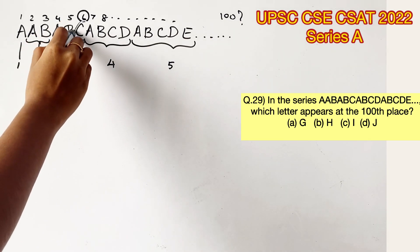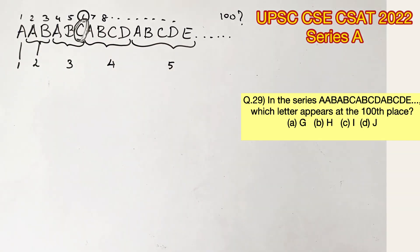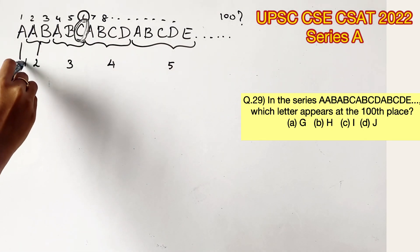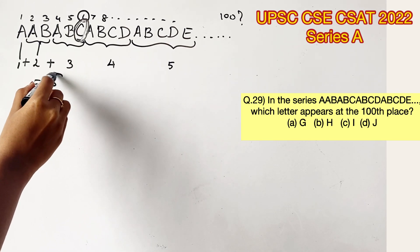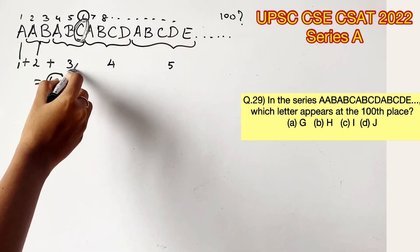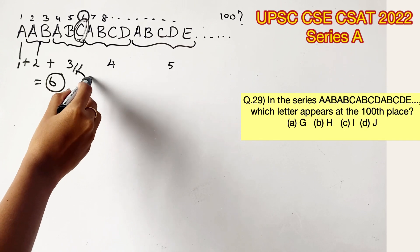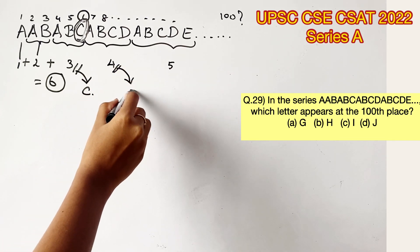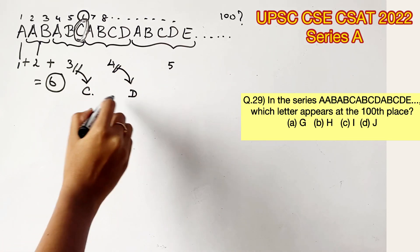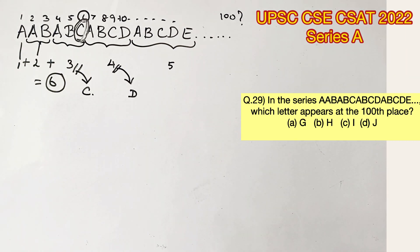If you notice in this position, the C can also be arrived by adding these up. 1 plus 2 plus 3 equals 6 as well. So, now that we know at the 6th position, there is the 3rd letter, which is C. Now we can consider whatever number comes at the last is the position of the letter in the alphabet sequence. So, 4 is D, 5 is E, and so on.